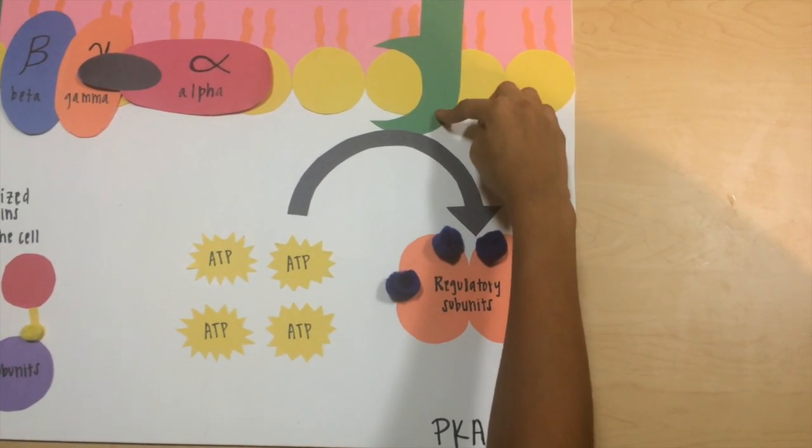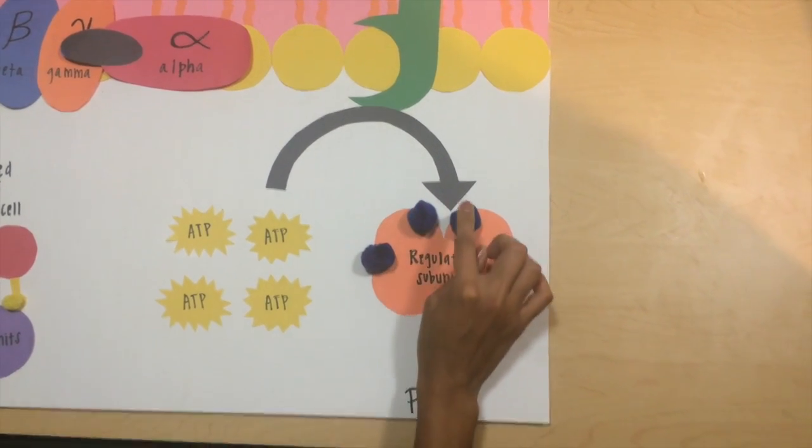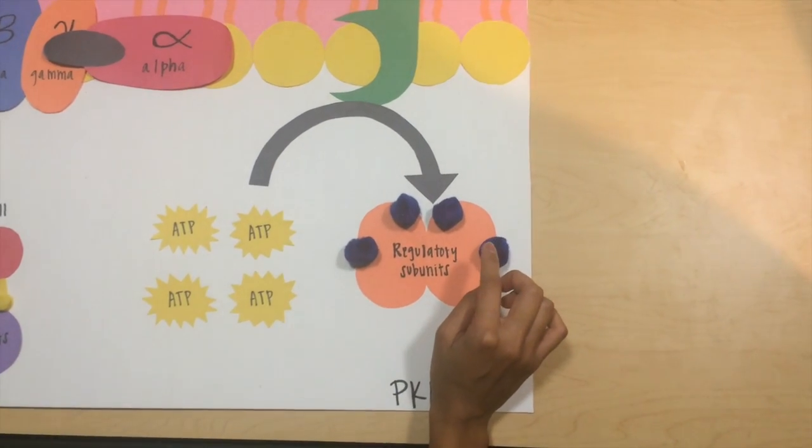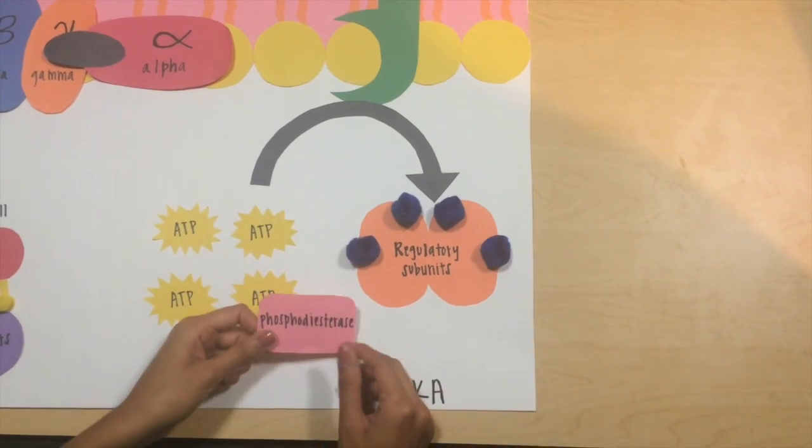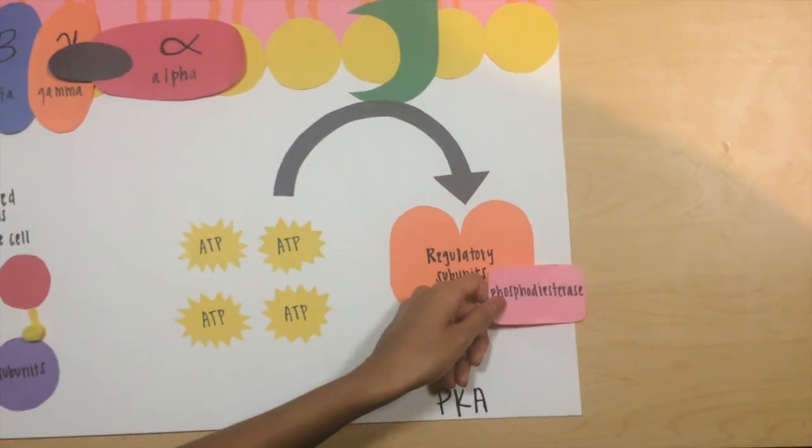Adenylyl cyclase is now deactivated, thus the production of cAMP from ATP is decreased. Phosphodiesterase then comes in and destroys the remaining cAMP in the cell.